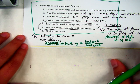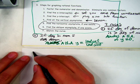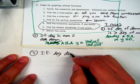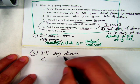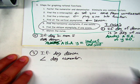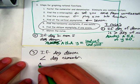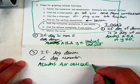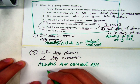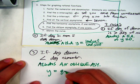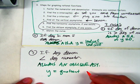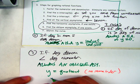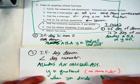Third case: if the degree in the numerator is bigger than the degree of the denominator, then there's always an oblique asymptote, and the equation is y equals the quotient — without the remainder — when you divide the actual equation.